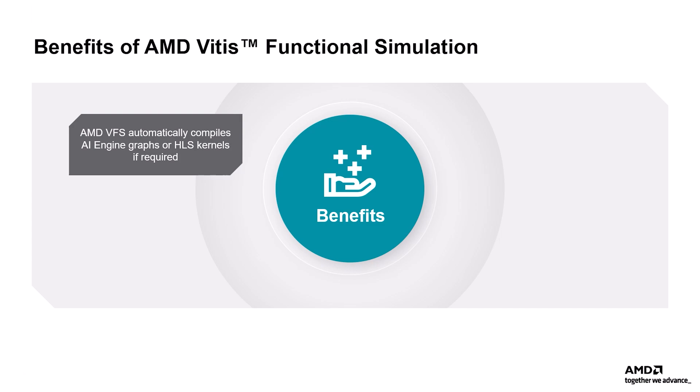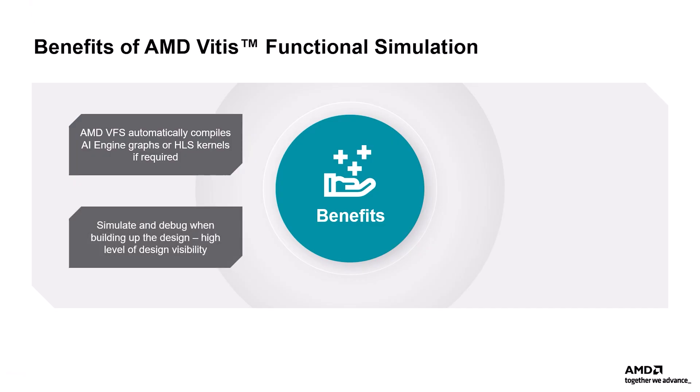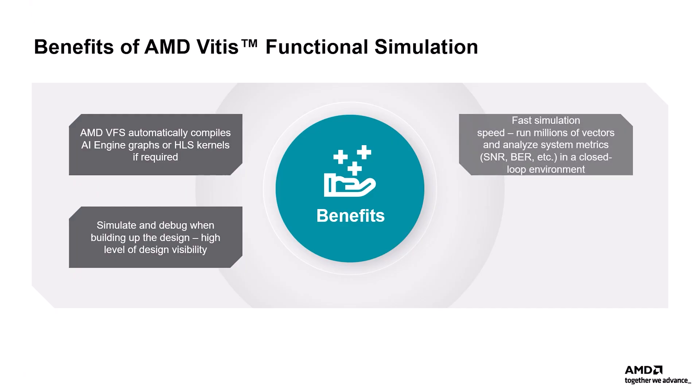The AMD Vitis functional simulation feature comes with some key advantages. Vitis functional simulation can automatically create the necessary connections and compile the AI engine graph or the HLS kernels if required. It is possible to simulate and debug while developing the design to ensure high visibility throughout the process. Its high simulation speed enables the execution of millions of vectors and the evaluation of system metrics such as signal-to-noise ratio, bit error rate, etc.